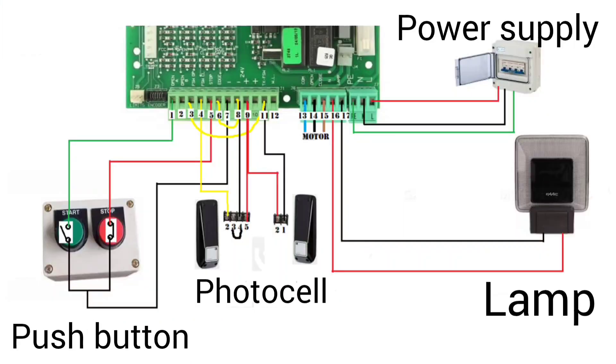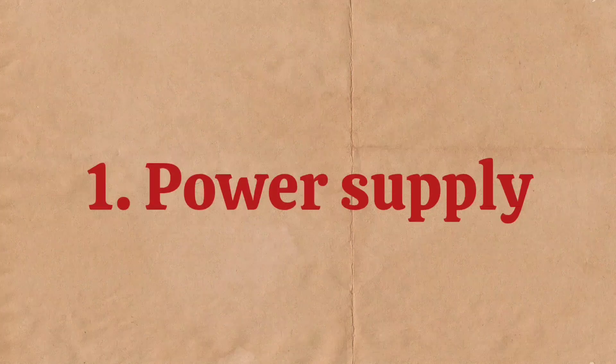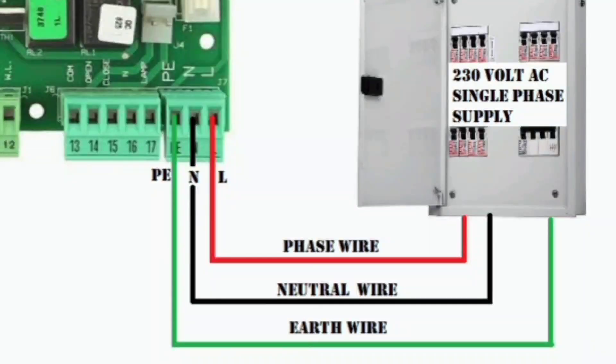Now let us see the connections. Number one, power supply. Use 3 pin connector, connect phase wire to L, neutral wire to N and earth wire to PE.